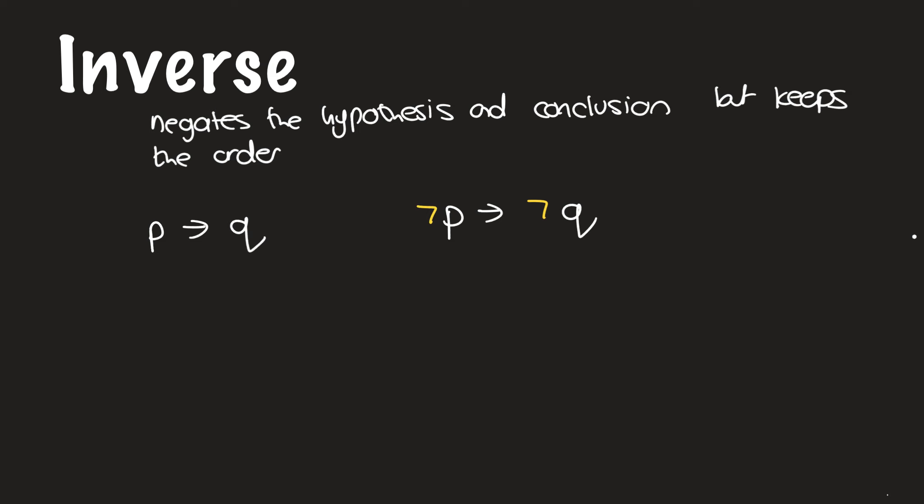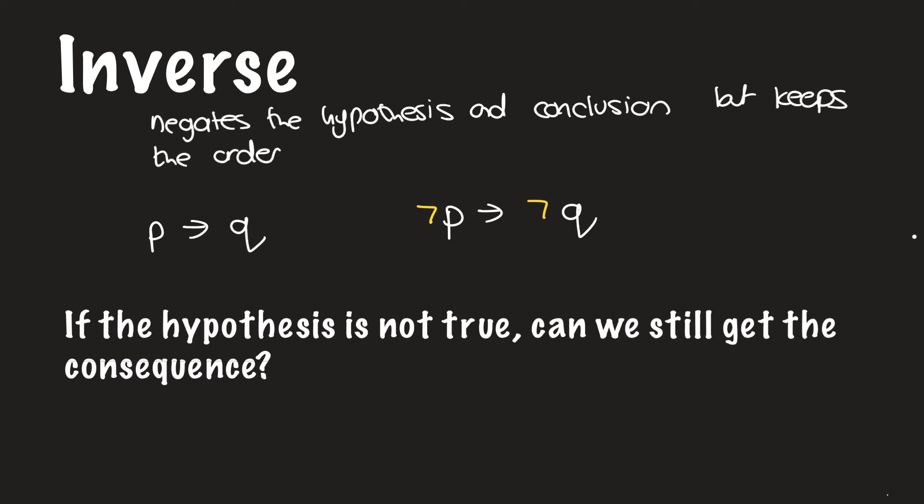We can ask ourselves a question to check if something is the inverse: if the hypothesis is not true, can we still get the conclusion? In other words, if the antecedent is not true, can we still get the consequence? The antecedent is the thing that comes before — like an ancestor, they came before you. If we're asking this question, then we are looking at the inverse.